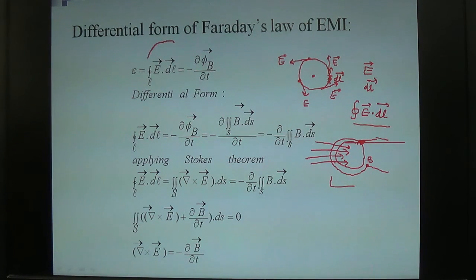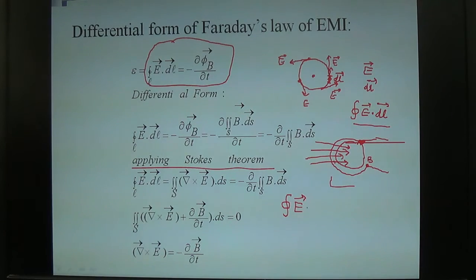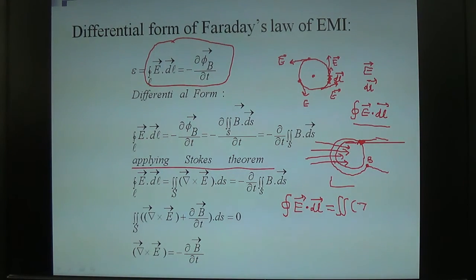The purpose is that we have to convert this formula into the differential form. What we are doing is applying Stokes' theorem. Stokes' theorem says that the closed path integral of vector E is equal to the open surface integral of the curl of that field: del cross E dot dS. So the left-hand side, the value of E dot dl, is equal to the open surface integral of del cross E dot dS, which equals minus d upon dt of the open surface integral of B dot dS.